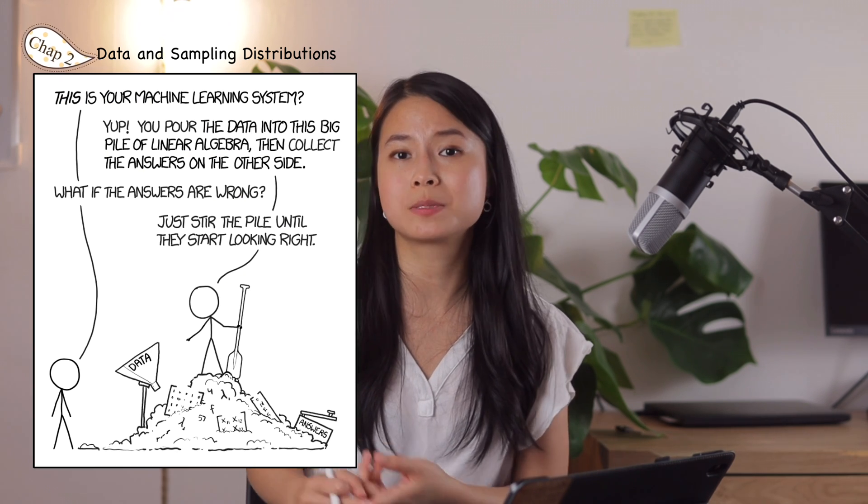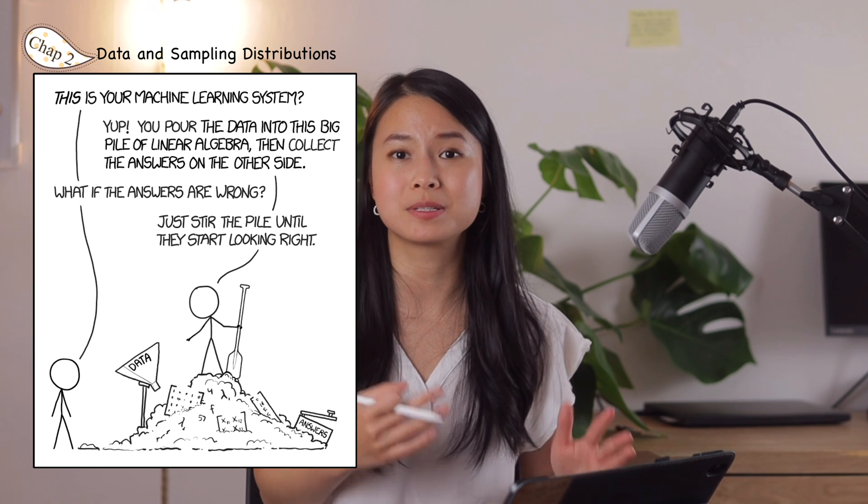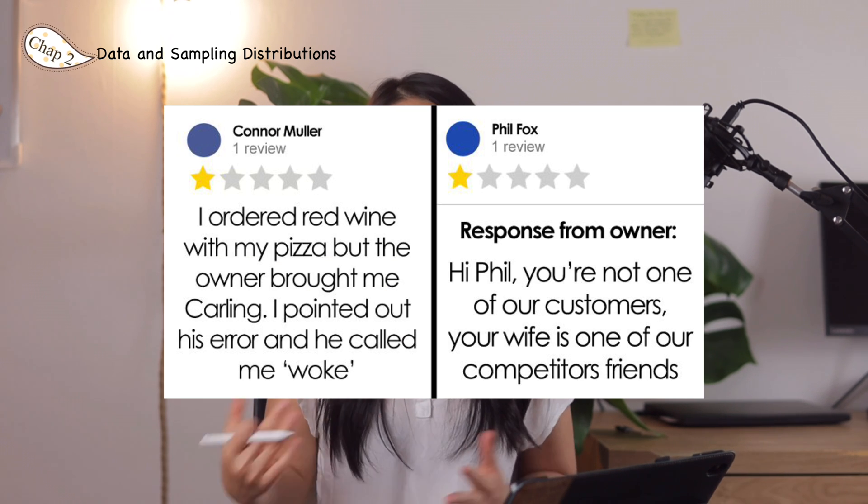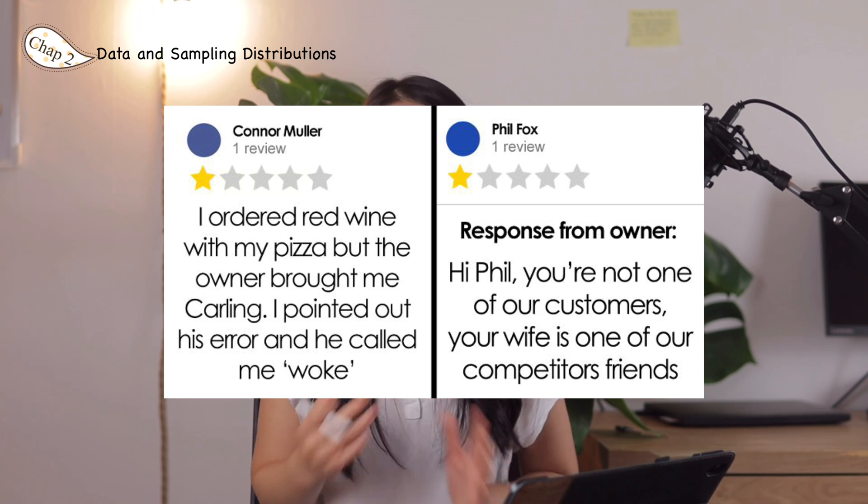Bias occurs when measurements or observations are systematically in error because they are not representative of the full population. Hardly any sample, including random samples, will be exactly representative of the population, but when the difference is significant, sampling bias occurs. For example, if you only look at people who comment on cat videos, you might conclude that 95% of the world population are cat people — but those people commented exactly because they are cat people. This is called self-selection bias, and it is very common. Restaurant, hotel, and café reviews on social media are also prone to this bias, because the people submitting them are not randomly selected.